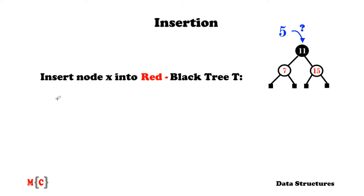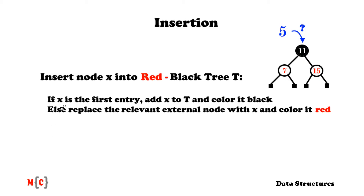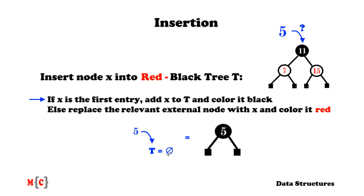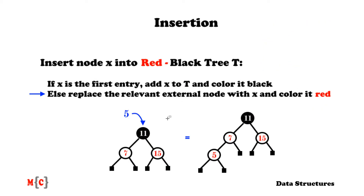So we have the task of inserting node x into red-black tree t. For insertion we consider the following decision rule: if x is the first entry, add x to t and color it black. If x is not the first entry, replace the relevant external node with x and color it red. In the first case, t is initially empty, so we add x as a black root. In the else case, using an existing red-black tree, we again want to insert 5, which ends up to the left of 7 — we replace the external node with x and color it red.